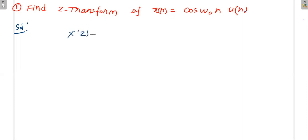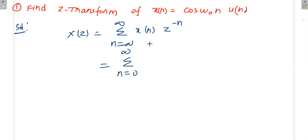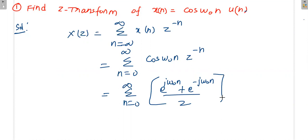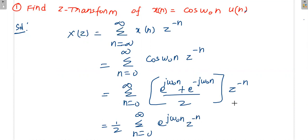The Z-transform X(z) is equal to summation from n = -∞ to +∞ of x(n) z^(-n). With x(n) = cos(ω₀n), this becomes summation from n = 0 to ∞ of cos(ω₀n) z^(-n). We write cosine in terms of exponentials: e^(jωn).